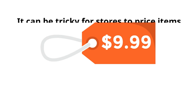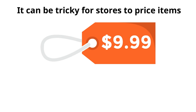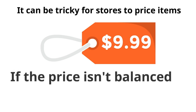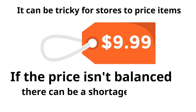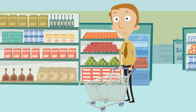It can be tricky for stores to price items. If the price isn't balanced, there can be a shortage or a surplus. Now you understand shortage and surplus, and you understand that people who offer goods and services have big choices when they set the prices for things. Well, that's about it — see ya!